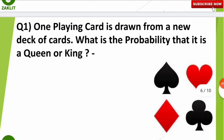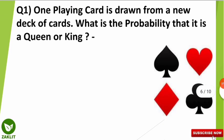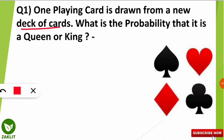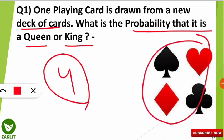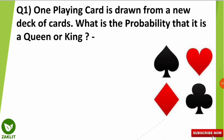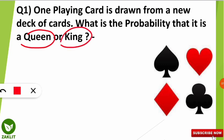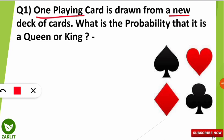The third question is about playing cards. One card is drawn from a new deck — meaning 52 cards total — and the question asks: what is the probability that it is a queen or a king? There are 4 kings in the deck — one each for spade, heart, club, and diamond — and similarly 4 queens. So there are 4 kings and 4 queens in the deck of 52 cards.